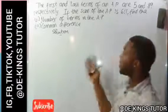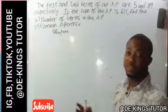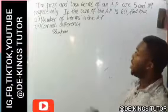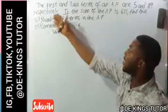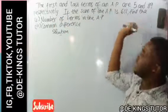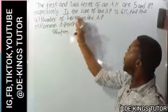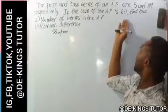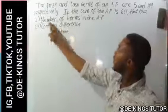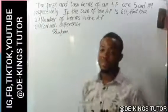Now, I want to solve a question that relates to arithmetic progression and geometric progression. The question says: the first and the last terms of an AP are 5 and 89 respectively. If the sum of the AP is 611, find: one, the number of terms in the AP, and two, the common difference.